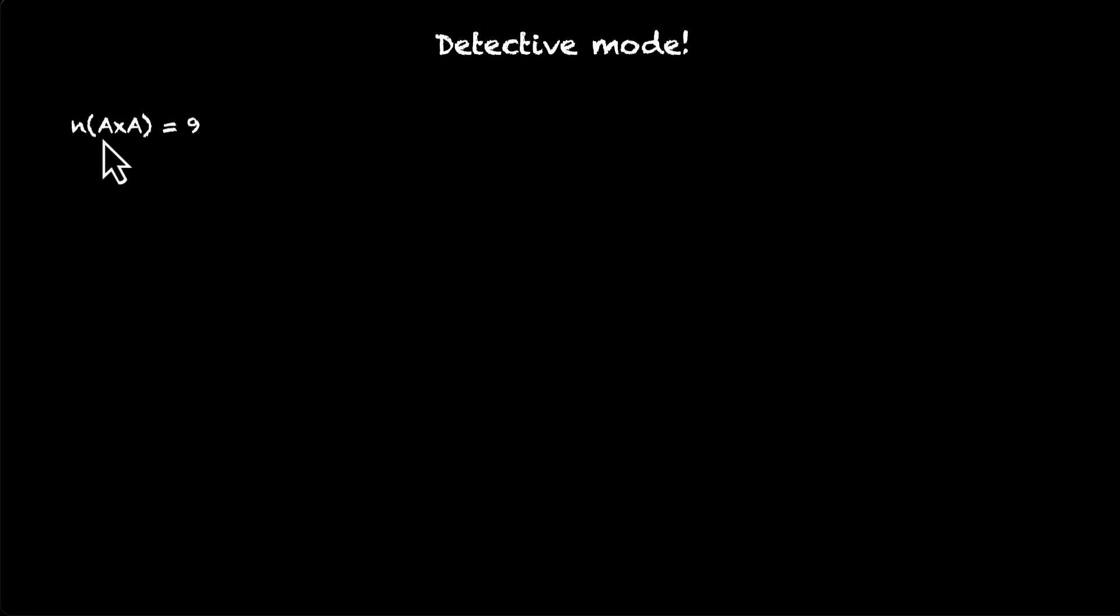We have a Cartesian product of A with itself. So A times A, but we don't know what that is. All we know is the number of elements of A times A is 9. What else do we know? Well, we know that two of them are (-1, 0) and (0, 1). Knowing just these two facts, can we figure out what A is? We need to find the set A. Try this on your own.